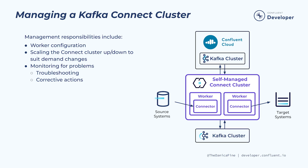Once your Kafka Connect cluster is up and running, there's a bit of management that needs to be done. Connect workers have a number of default configuration settings that you might need to alter depending on your use case. Also depending on the needs of your systems, you might need to scale the Connect cluster up or down to suit demand changes. And of course, you'll be monitoring for problems and how to fix them.